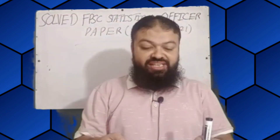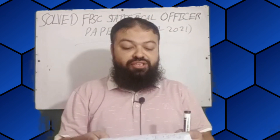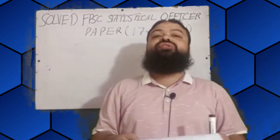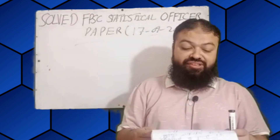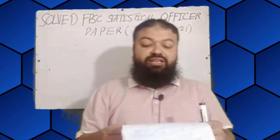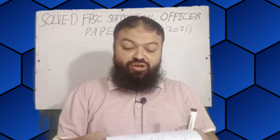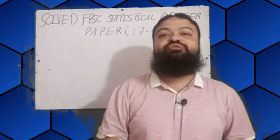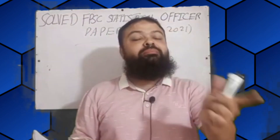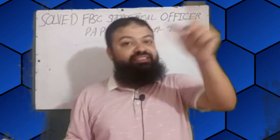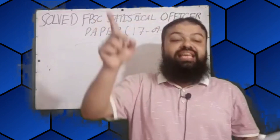Question number fifteen: what is another name of the regression method? It is also called the causal method. Question number sixteen: one or two tail test will be determined by what? The answer is the alternative hypothesis H₁. One tail or two tail test is decided by the alternative hypothesis H₁.